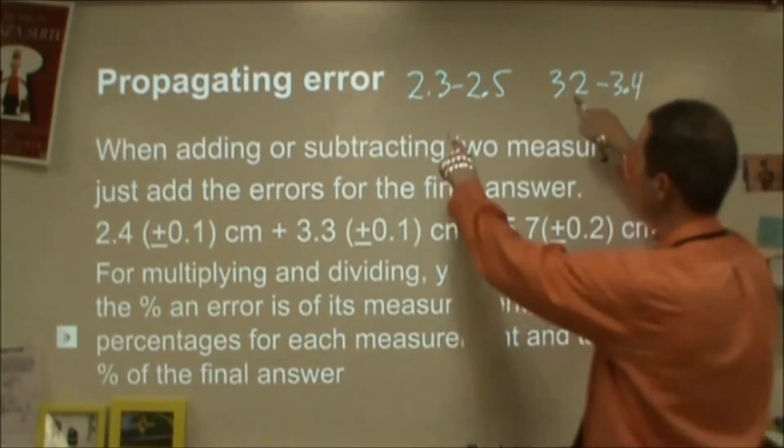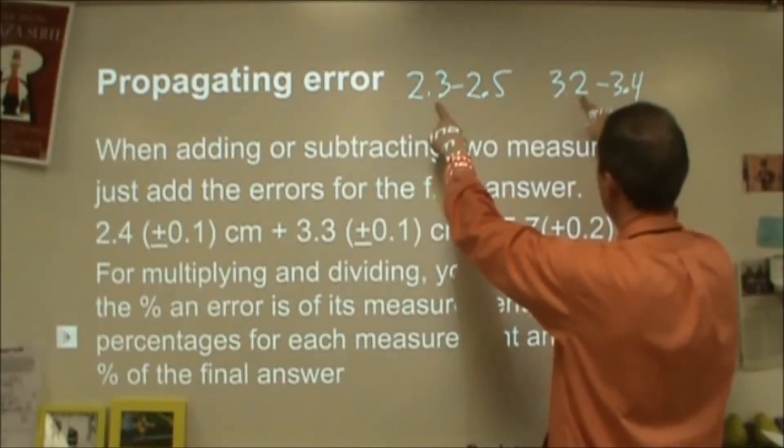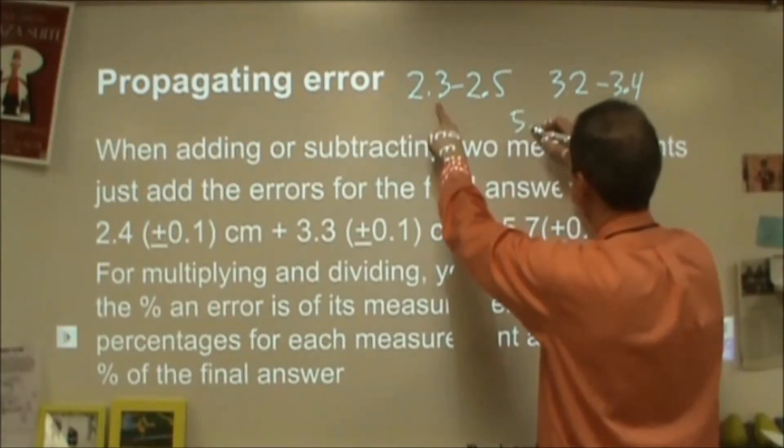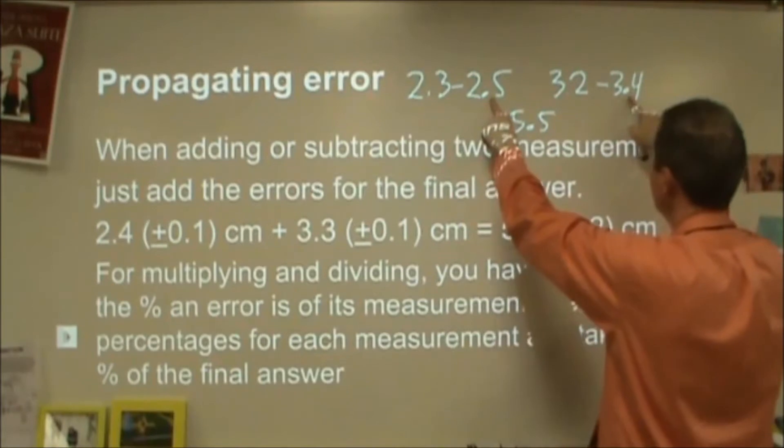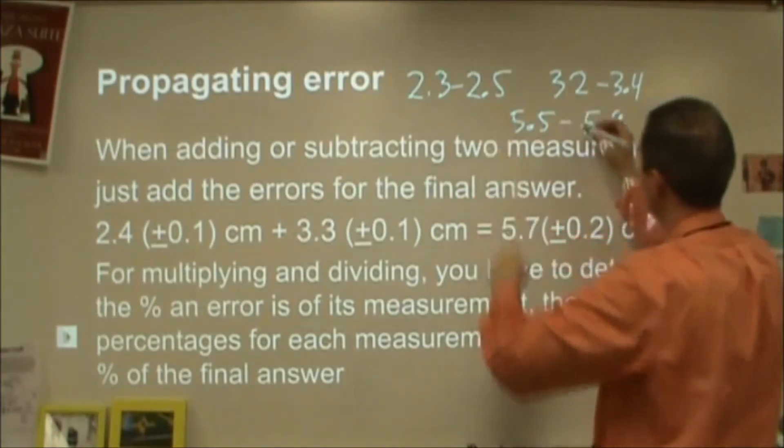So if I take the minimums of that, I get 2.3 plus 3.2, that's 5.5. And 2.5 plus 3.4 is my upper end of that range, 5.9.